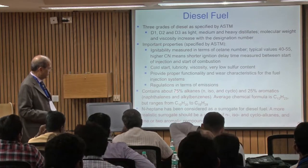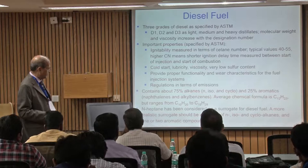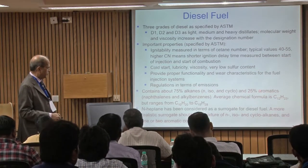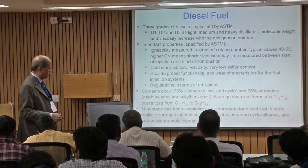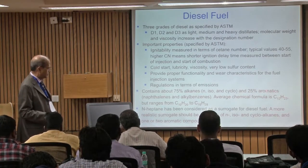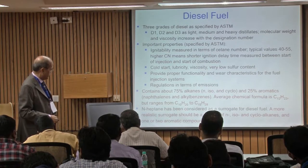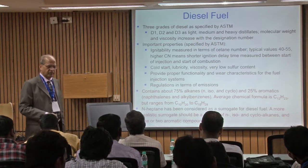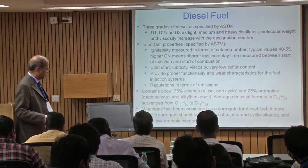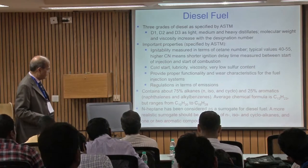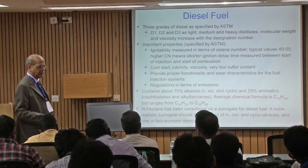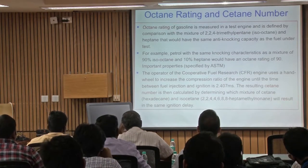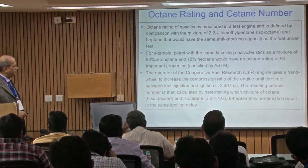Diesel composition is about 75% alkanes — normal, iso, and cyclo — and about 25% aromatics. Aromatics are sources of particulates. The cetane number is determined using a mixture of hexadecane (C16) and isocetane that gives the same ignition delay — the standard value is 2.4 milliseconds. Earlier research used normal heptane as a diesel surrogate; more recent work uses a mixture of normal, iso, and cycloalkanes, sometimes with one or two aromatics like toluene.